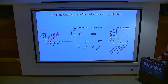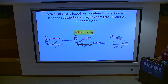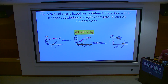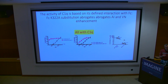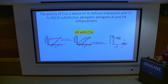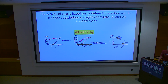As a control experiment, making a K-to-A substitution at position 322 in the FC region that should block the interaction with C1Q — based on what's published — makes the effect go away. Everything is consistent.